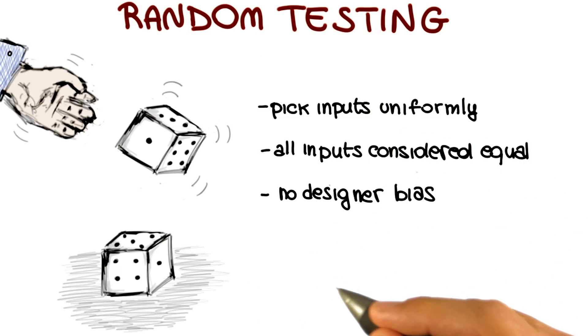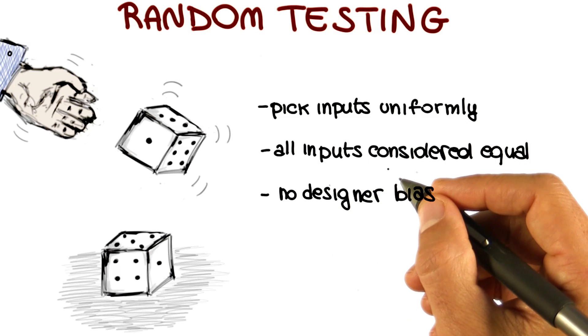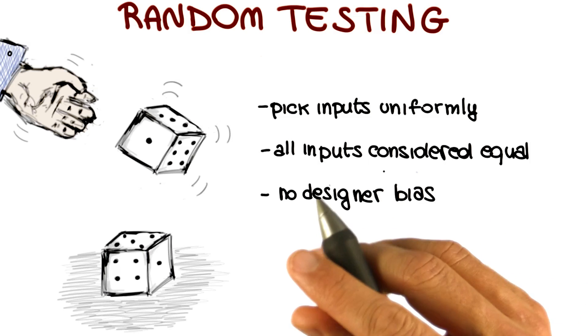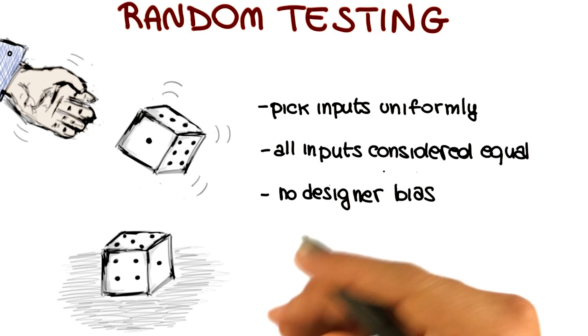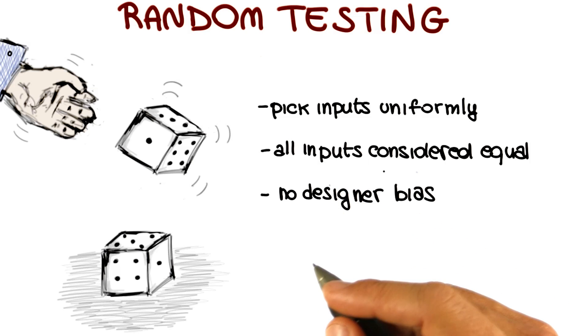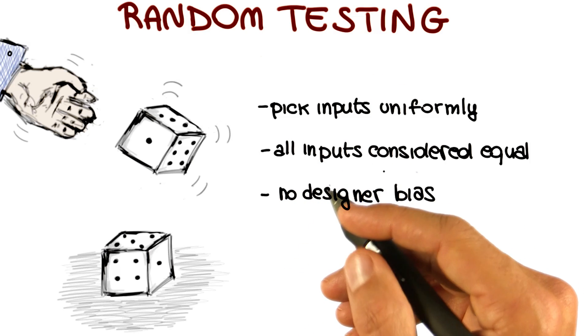So what does designer bias mean? Designer bias is the problem of making the same assumption when we read the specification and interpret it, and when we develop test cases. Which means that the developer may develop code assuming a given behavior of the user, and we might write tests making the same assumptions. And the problem, of course, is even worse if it's the same person that develops the code and writes the test cases.